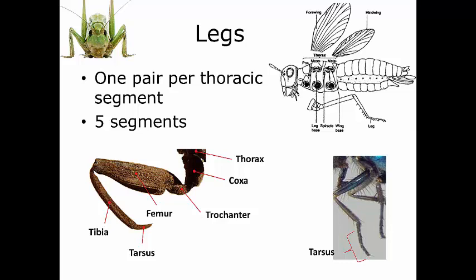All legs have five major segments. The proximal-most segment, closest to the thoracic region or body wall, is called the coxa. The coxa attaches to the thorax, then attaches on the other end to the trochanter, which attaches to the femur, then the tibia, and then the tarsus. So the order is: coxa, trochanter, femur, tibia, tarsus. All insect legs have these same exact regions in this same order.